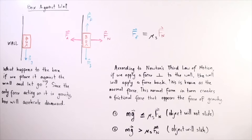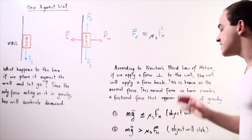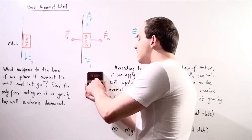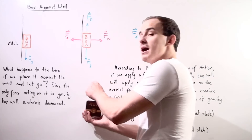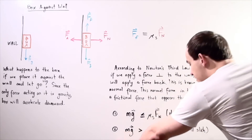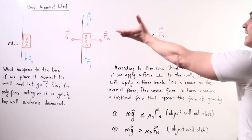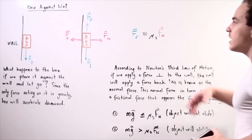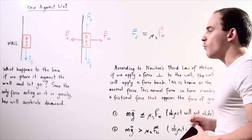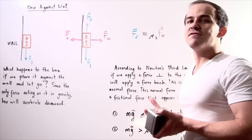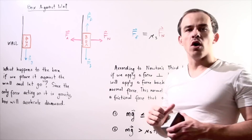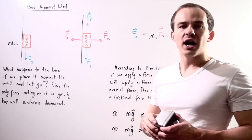What happens if the normal force is not high enough? If the applied force is very weak, the object will begin to move. In this case, the object continues sliding downward because the frictional force is less than the gravitational force, and we once again have a net force acting downward along the y-axis.